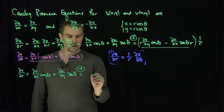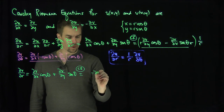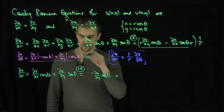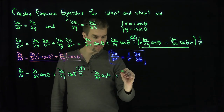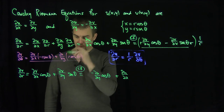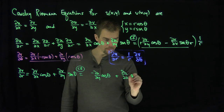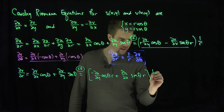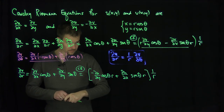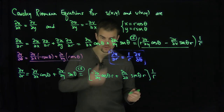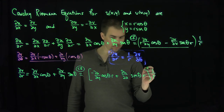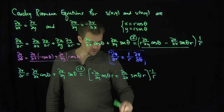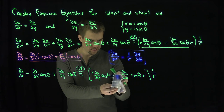Using Cauchy-Riemann, vx equals negative uy, so this becomes negative partial u partial y times cosine theta. And vy equals ux, so the second term is partial u partial x times sine theta. I factor in r and divide by 1 over r, then pull out a negative sign, so the first term becomes positive and the second term becomes negative.